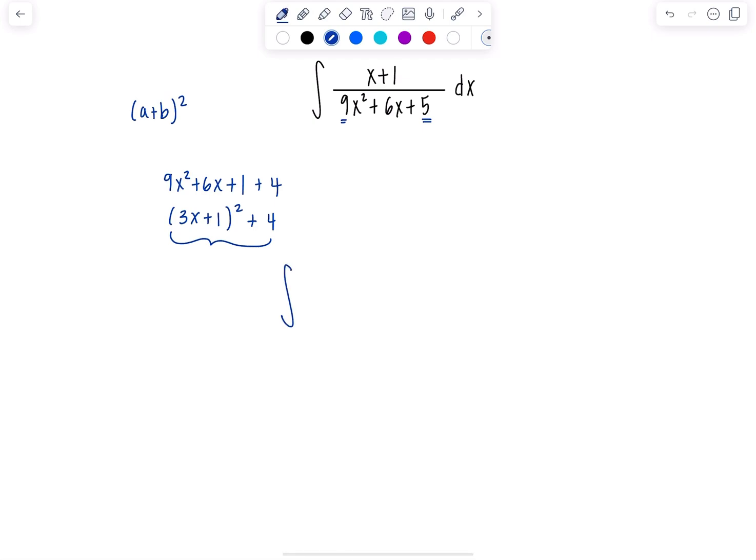So this is x plus 1 over 3x plus 1 squared plus 2 squared dx. I'm going to split each of the terms in the numerator over the denominator and work with two different integrals.